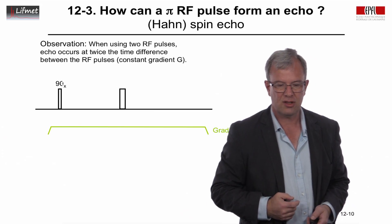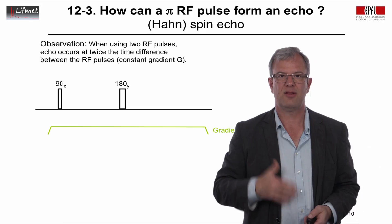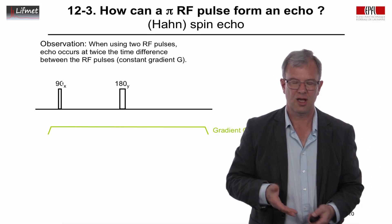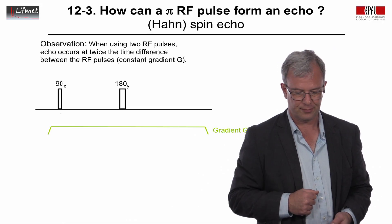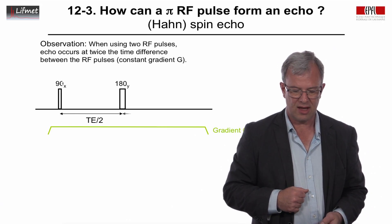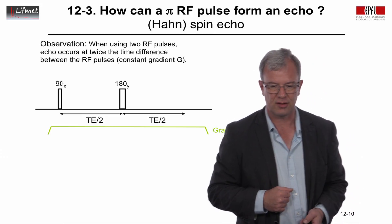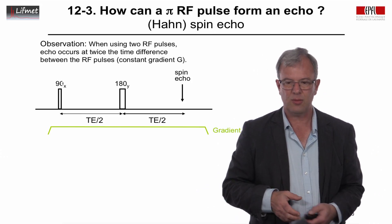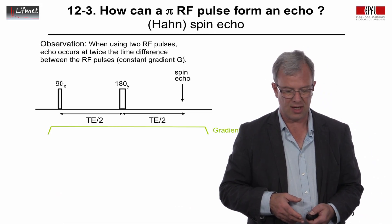After a certain time, we will apply an RF pulse of twice the duration — so it's a 180-degree pulse — but this time around the Y axis. This time interval we will call Te/2, and we're going to look at what's happening after another Te/2. At this point, we will observe a spin echo.